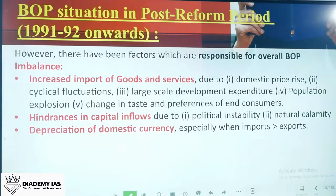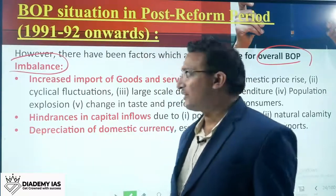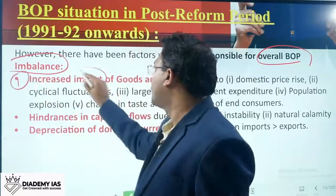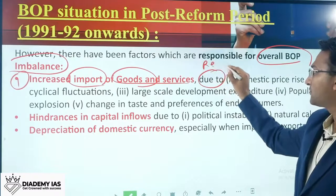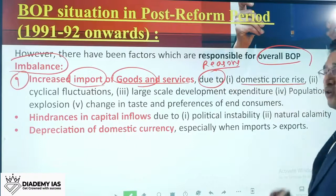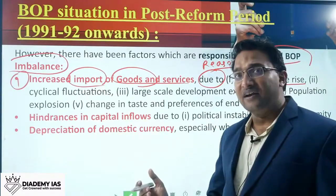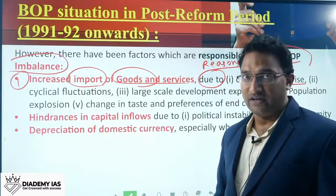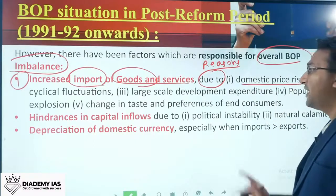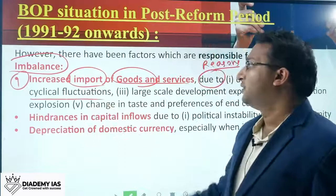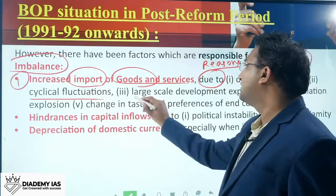However, there are some factors responsible for overall BOP imbalance. The first is increased imports of goods and services. The reasons include domestic price rise — India's high inflation means prices inside India are more than outside, incentivizing people to buy from abroad. Second, cyclical fluctuations reduce exports and increase imports. Third, large-scale development expenditure requires buying foreign technology and goods.